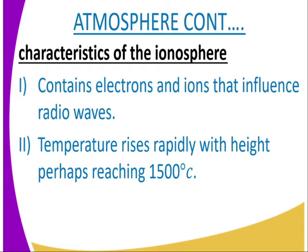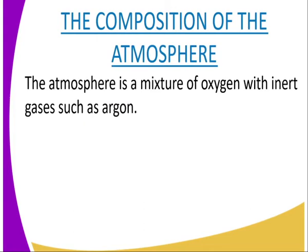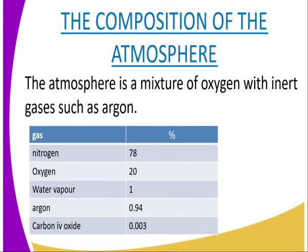What is the composition of the atmosphere? It is mainly composed of nitrogen gas, oxygen gas, and other gases referred to as inert gases, like argon. The composition is: nitrogen 78%, oxygen 20%, water vapour 1%, argon 0.94%, and carbon dioxide 0.003%.